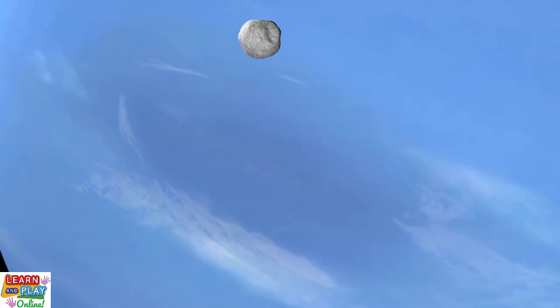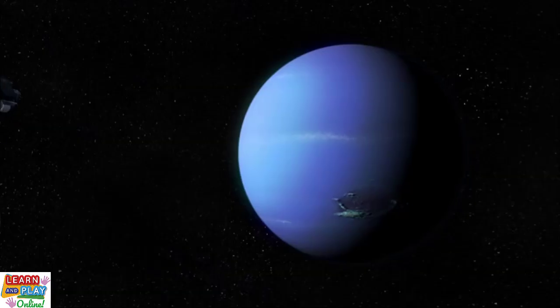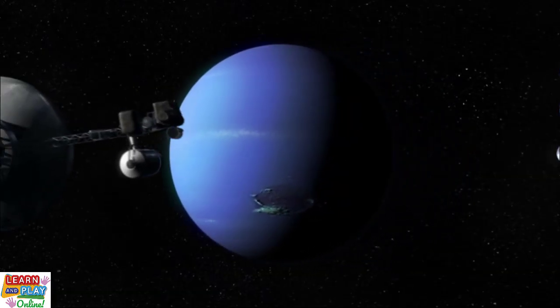Neptune experiences the strongest winds in the solar system, reaching speeds of up to 1,200 miles per hour or 2,000 kilometers per hour, making it nine times stronger than the most powerful winds experienced here on Earth. In 1989, the Voyager 2 spacecraft made the discovery of a well-known feature in the Southern Hemisphere on Neptune, known as the Great Dark Spot.